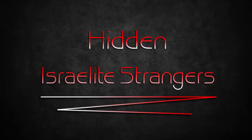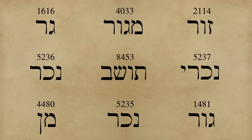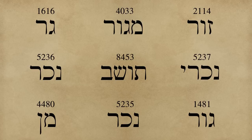What you have to remember when you're studying is that the Old Testament was originally written in Hebrew. Now there are nine different Hebrew words for stranger in the Old Testament. Each one of these words are translated as stranger in English, but they all have slightly different meanings. So it's not as simple as it might seem when it comes to understanding the word stranger.